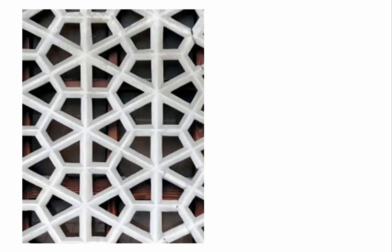We're going to work with this lattice that appears to be covering a window of some sort. The first thing you want to do is identify your rotation axes of the highest order. I can see a six-fold rotation axis in the middle here — this is a hexagon, and each element out here gets rotated pi over three radians to some other element. So I have a six-fold rotation axis in the middle of each of these hexagons.